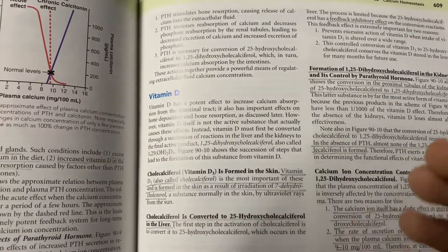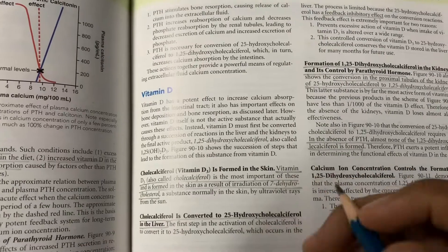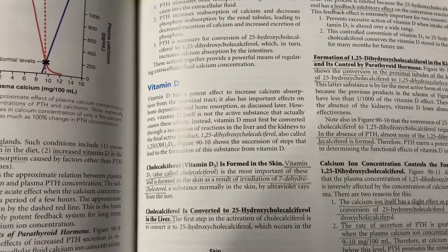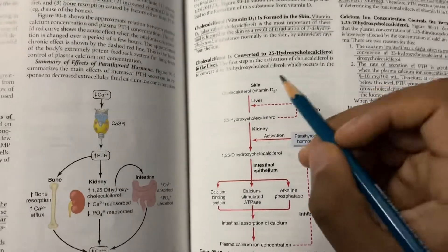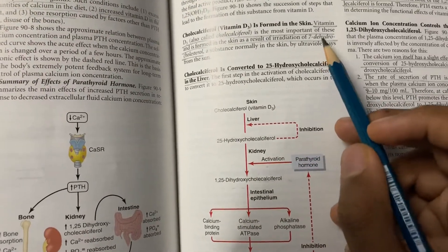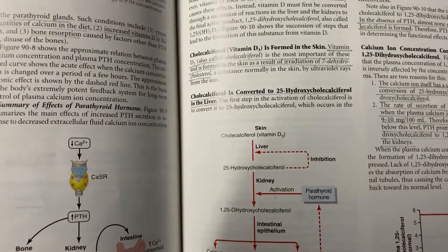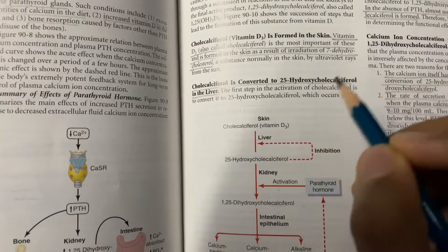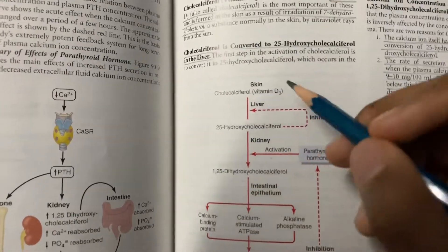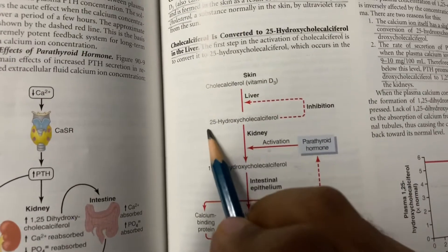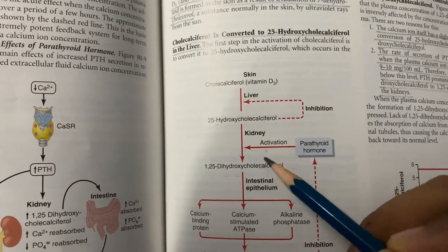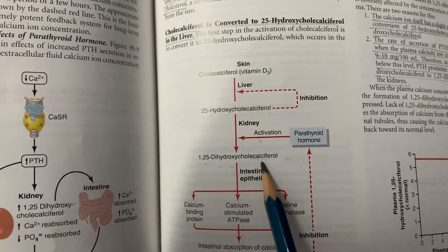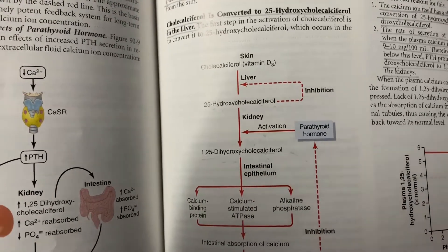Vitamin D has similar actions to PTH but increases plasma levels of both calcium and phosphate, whereas PTH decreases phosphate and increases calcium. Vitamin D formation: in the skin, 7-dehydrocholesterol is irradiated by UVB rays of sunlight to form cholecalciferol (vitamin D3). In the liver, 25-hydroxylase converts it to 25-hydroxycholecalciferol (calcidiol). In the kidney, 1-alpha hydroxylase converts it to 1,25-dihydroxycholecalciferol (calcitriol), which is the active form of vitamin D3.